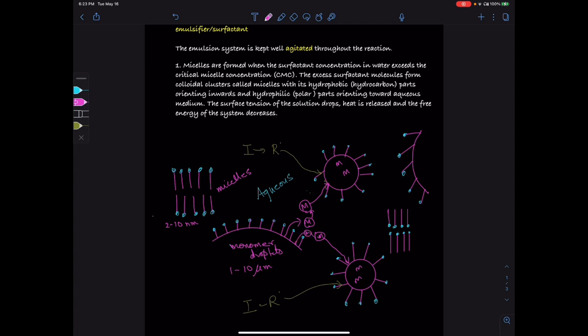This keeps continuing until the monomer droplet concentration is almost over. At that point, polymerization is almost complete. As these micelle particles swell with the polymer chain, they also consume more and more surfactant molecules for stability. So the surfactant concentration also comes down toward the end.